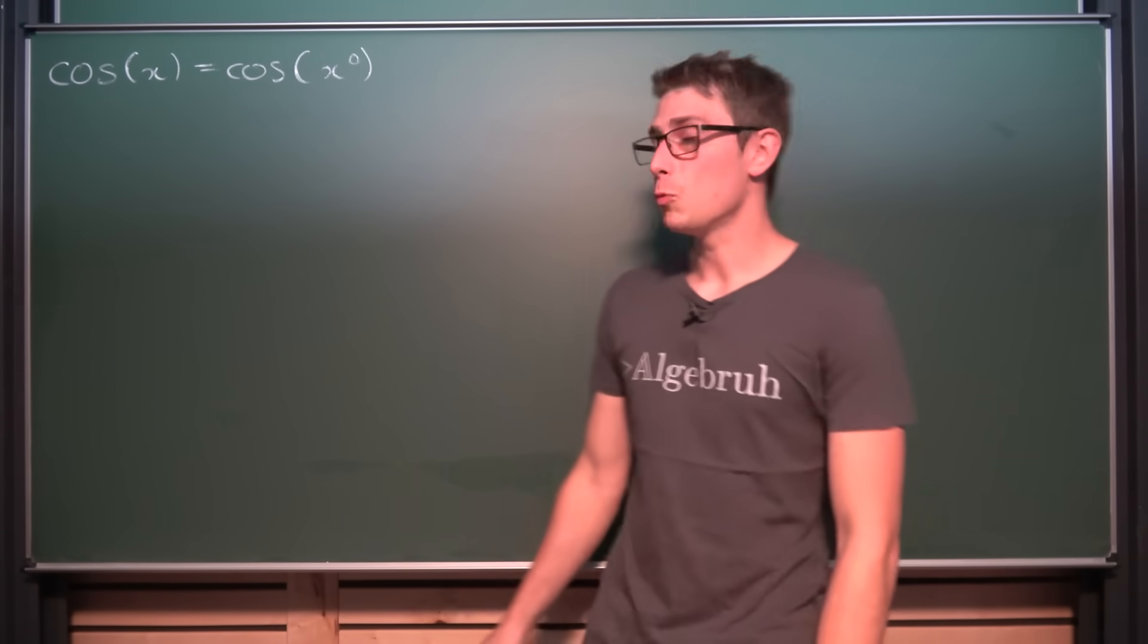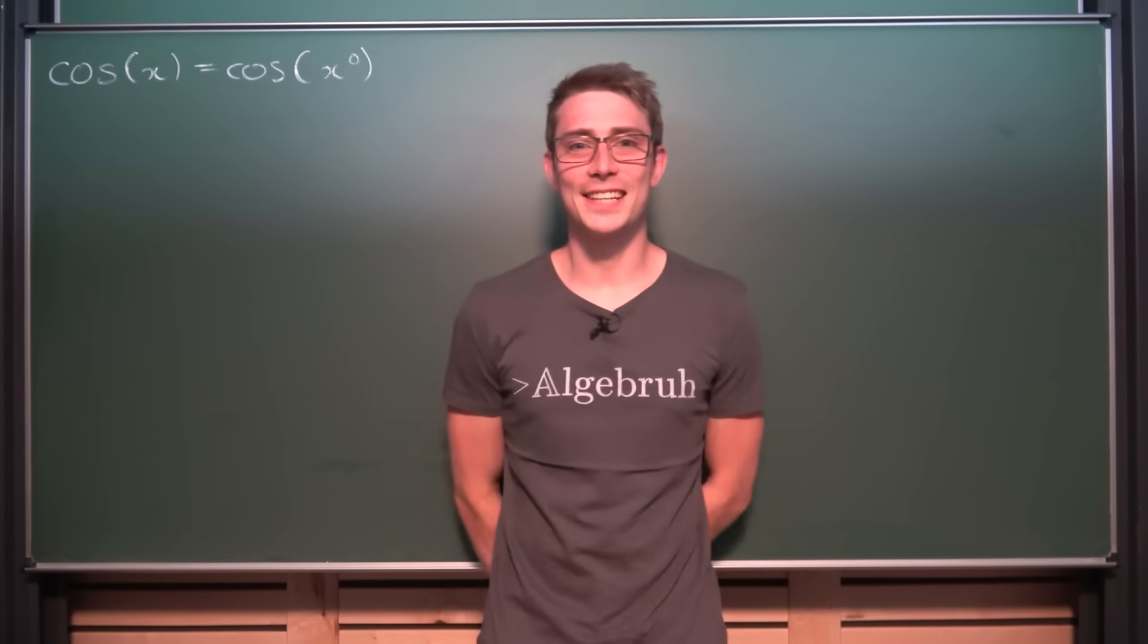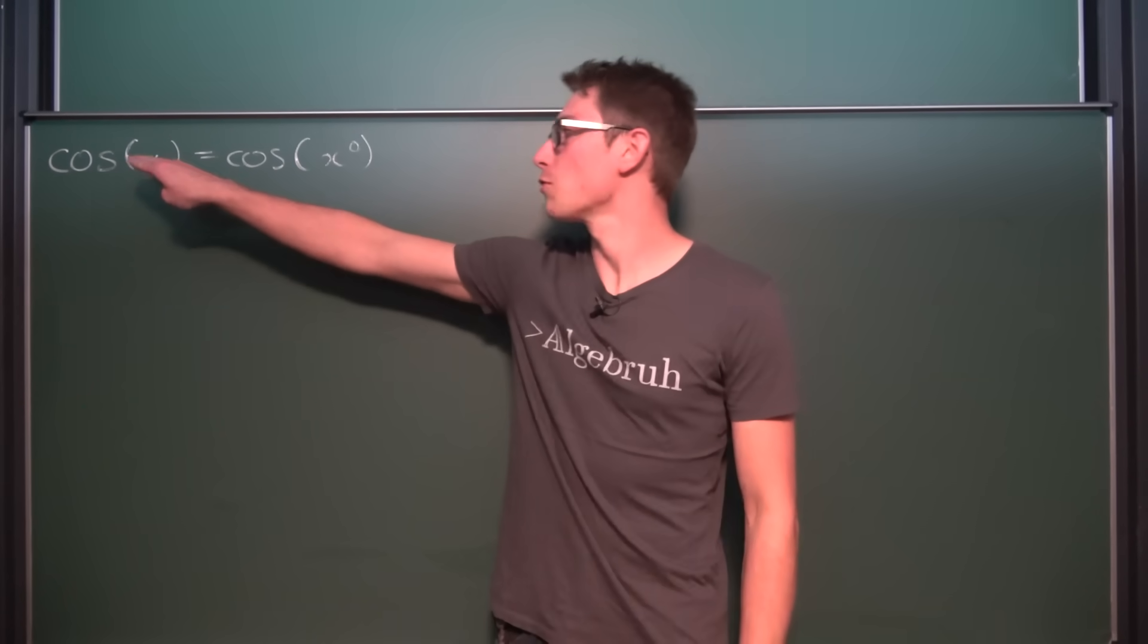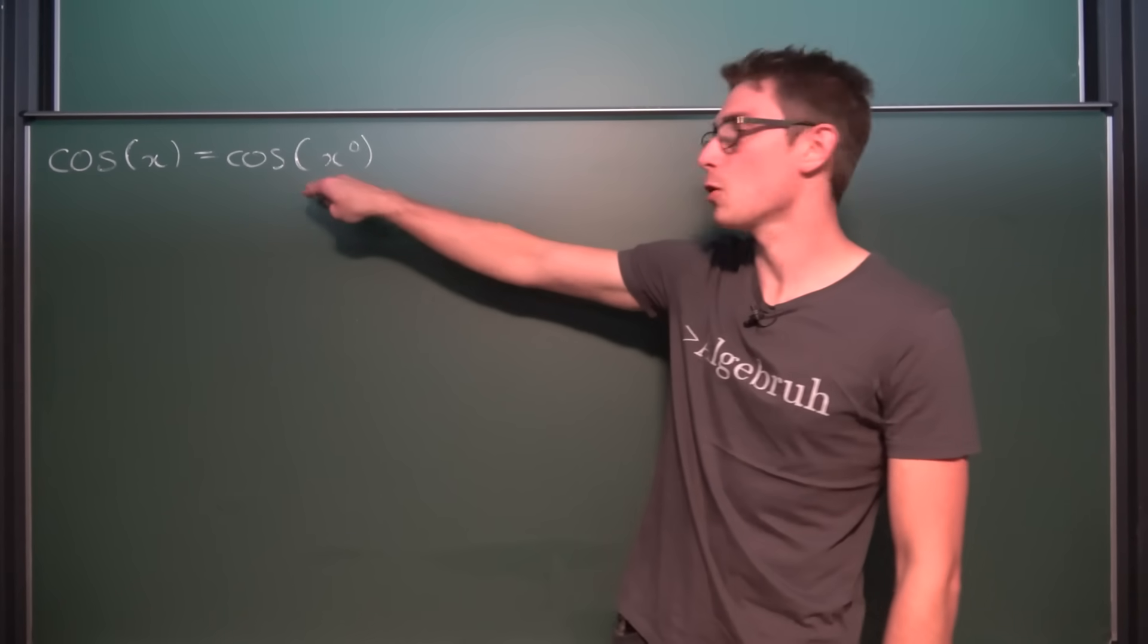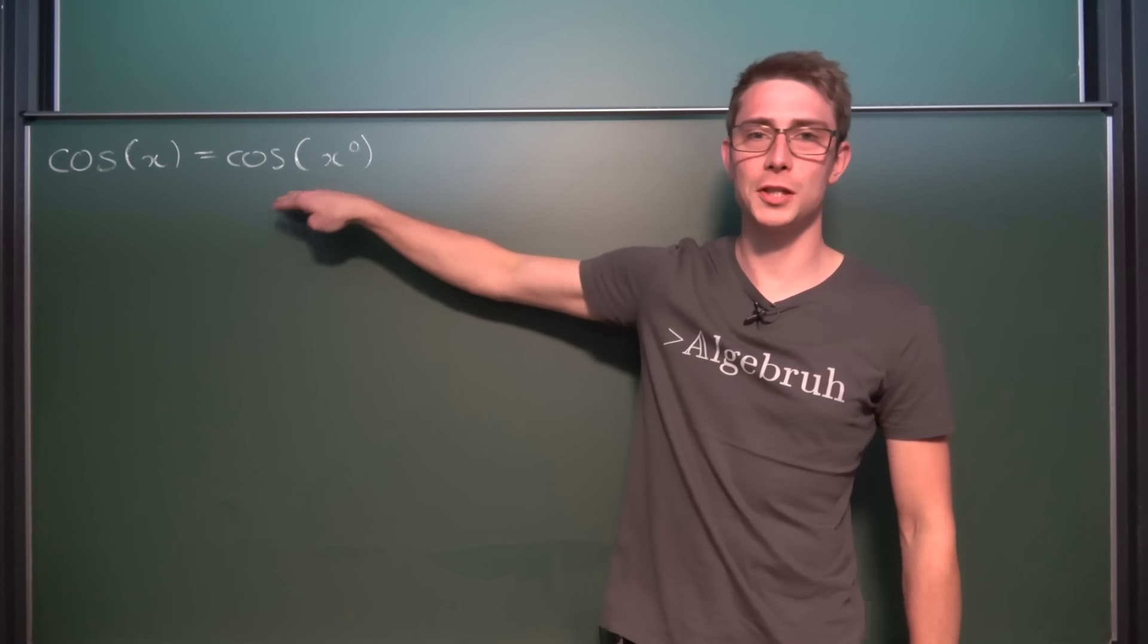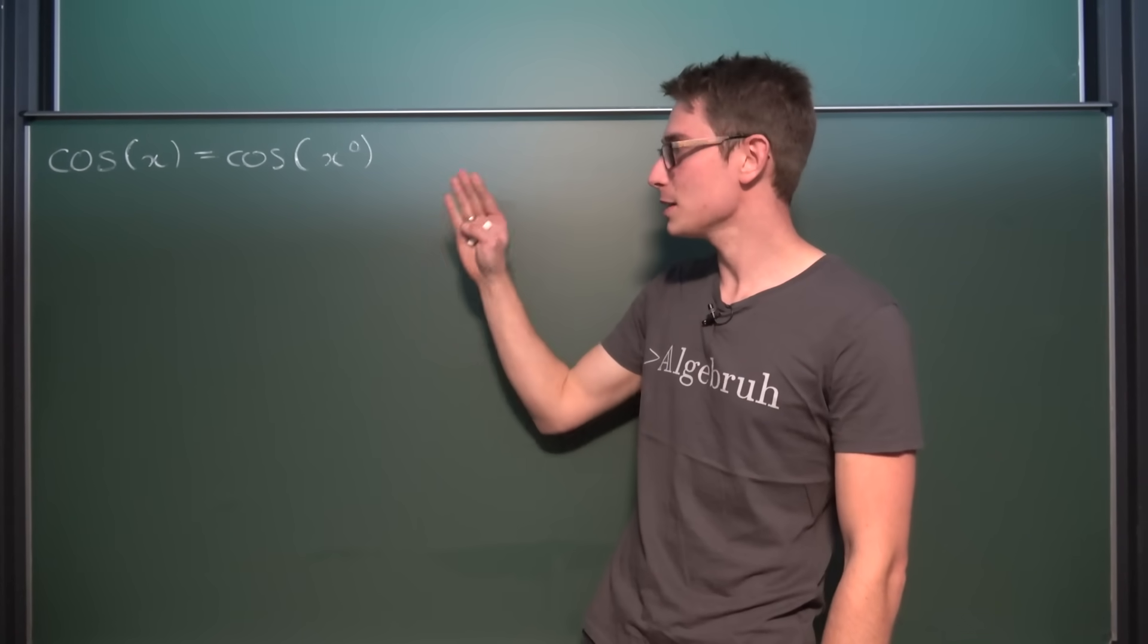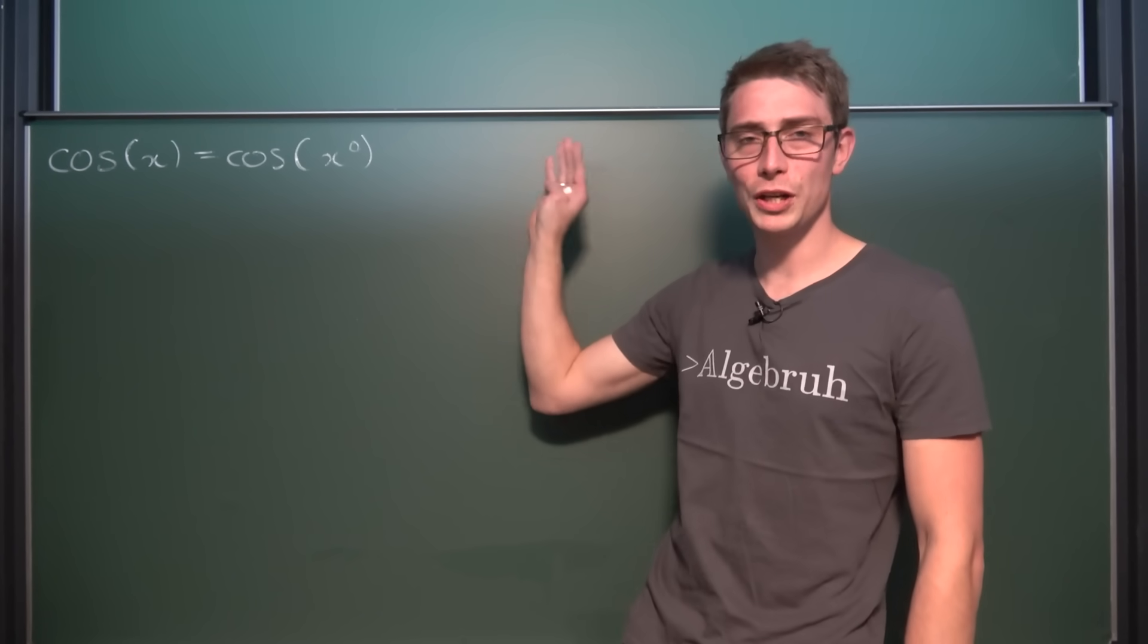Mathematicians, today we are going to answer the age-old question: when is the cosine of radians equal to the cosine of degrees? You can do this with the sine, tangent or whatever too, but it really doesn't matter. I just want to get a point across.